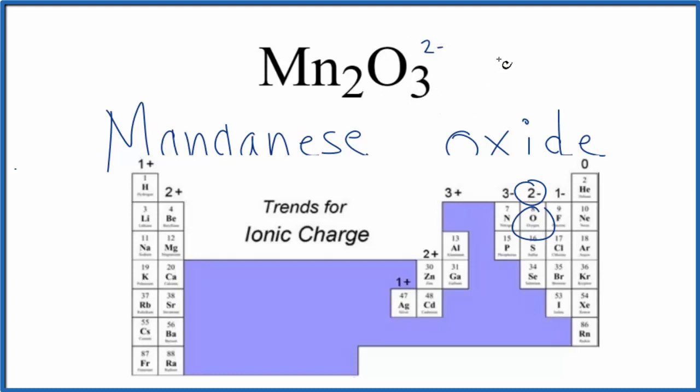Three times two minus is six minus. So we need to get six plus over here so the net charge adds up to zero. So two times three plus, that would give us six plus.